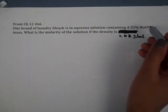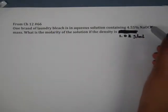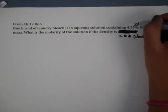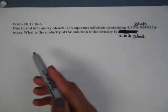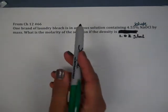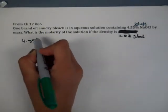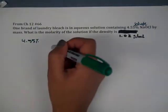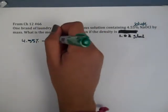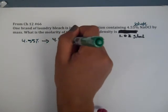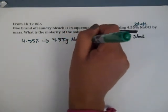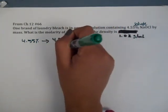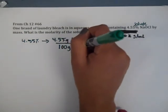So the first thing we're going to deal with is the 4.55%, which is our solute. And we have a solution, the bleach solution. So if we have 4.55% NaOCl, remember from last semester we're going to assume 100 grams. So it's going to be 4.55 grams of solute in every 100 grams of solution.